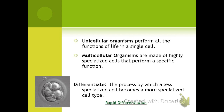For example, heart cells are not great at digesting nutrients or at moving gases, but they were made to beat and to pump blood through the body. So they have developed this very specialized process. The process of specialization can also be called differentiation, and this is the process by which a less specialized cell becomes a more specialized cell type.